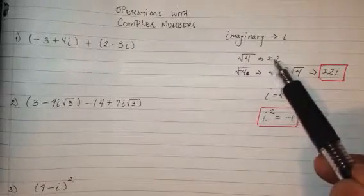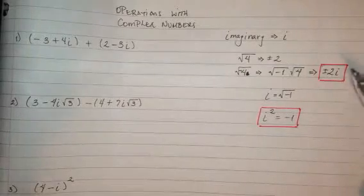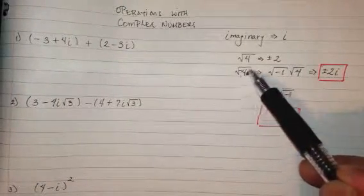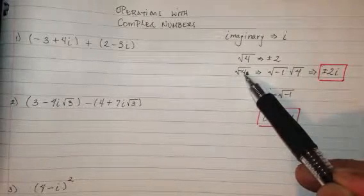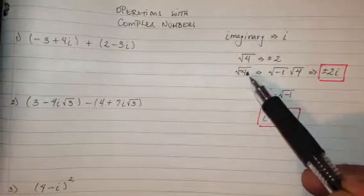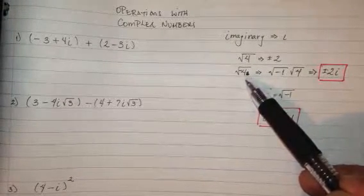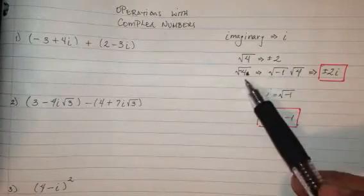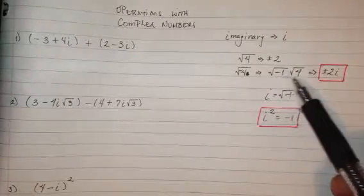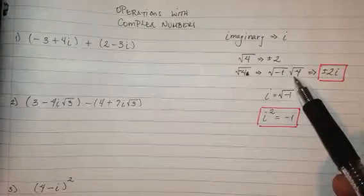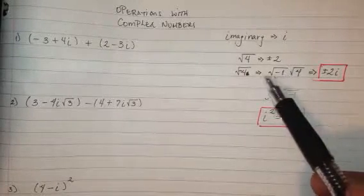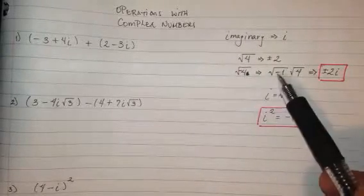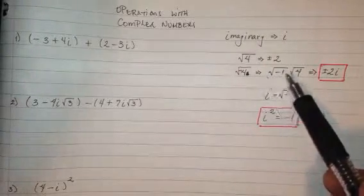We know how to take the square root of 4 — it's plus or minus 2. But you're taught in Algebra 1 that you can't take the square root of a negative. So the square root of negative 4, what does that become? We call it undefined. In Algebra 2, you learn it's called imaginary. The reason is because you can actually separate it into negative 1 times positive 4. Mathematicians had a problem with this idea of taking the square root of a negative, so they developed this concept of imaginary numbers.